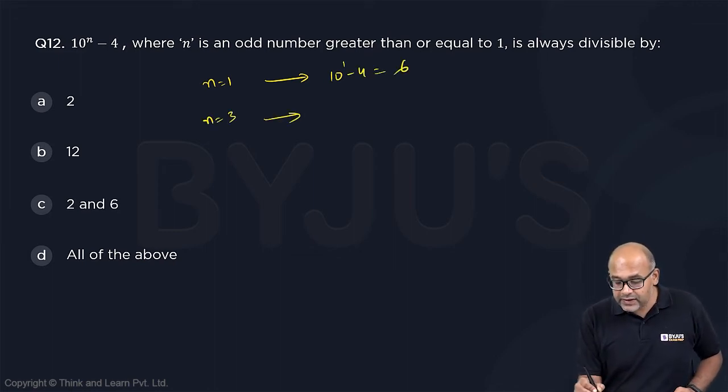If n equals 3 you will get this as 10 power 3 minus 4 which is 996.